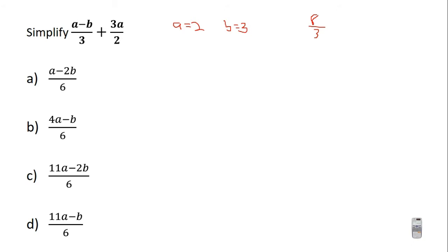When a is equal to 2 and b is equal to 3, the value of the expression is 8 over 3. Now you substitute a equals 2 and b equals 3 into each of the answer options to find out which option gives you 8 over 3 — that option is the right answer.